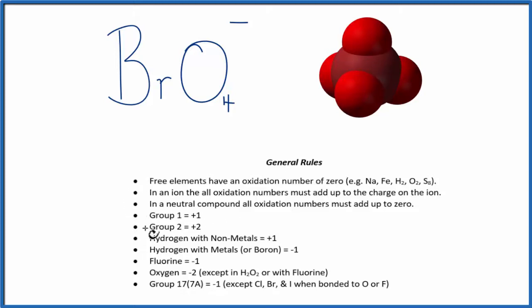So looking down our rules here, we can see oxygen, that's a minus 2. So it always has an oxidation number of minus 2, except with a few exceptions.